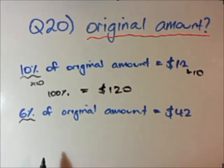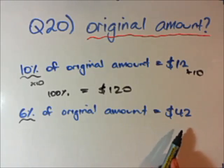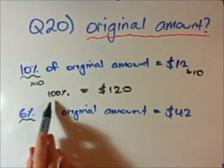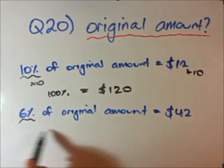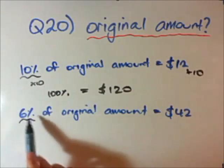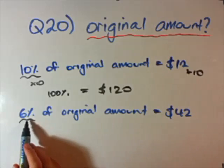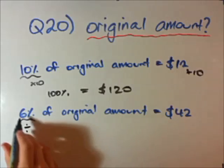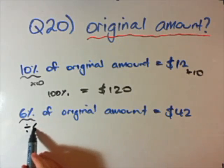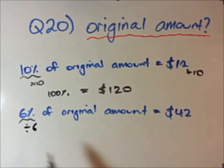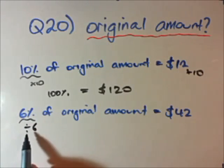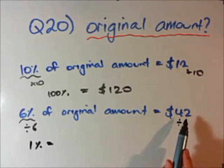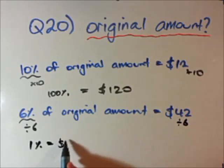Now a slightly harder one: 6% of some original amount is $42. This isn't as straightforward to jump straight to 100%. The step I'll use — which works every time — is to find 1% first, which is always easy: just divide by whatever the number is. So 6% divided by 6 gives 1%, and $42 divided by 6 gives $7.